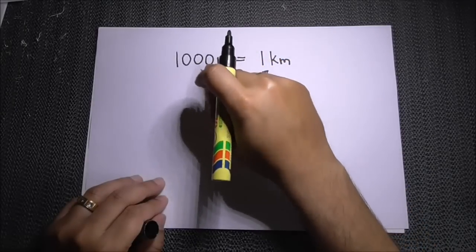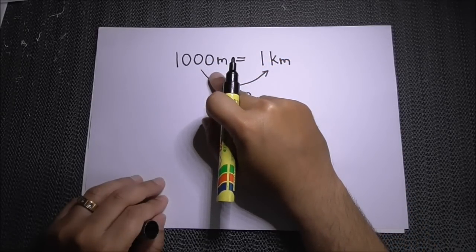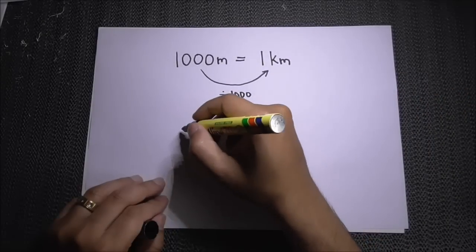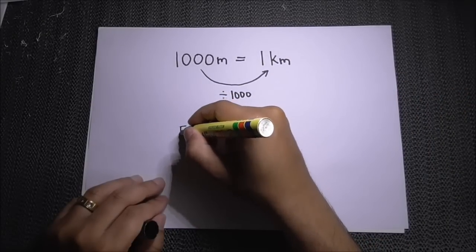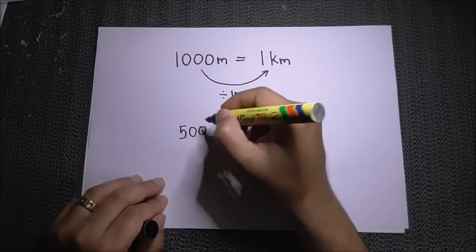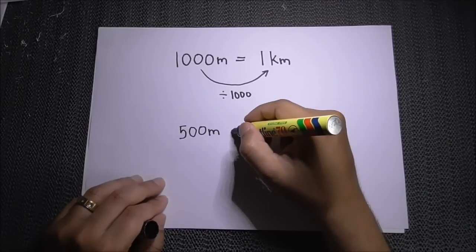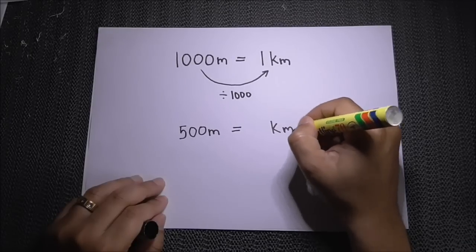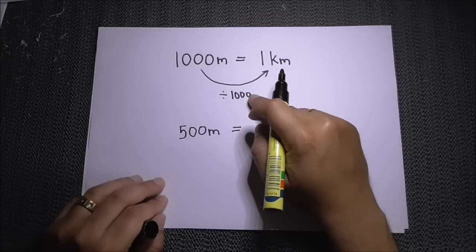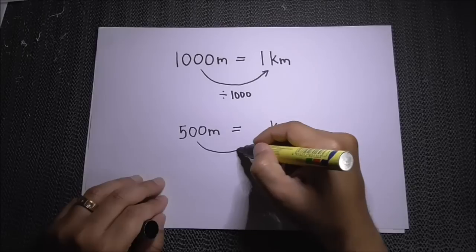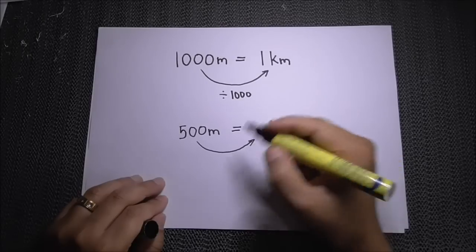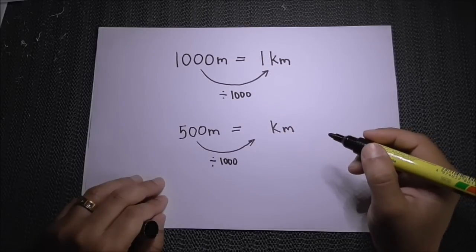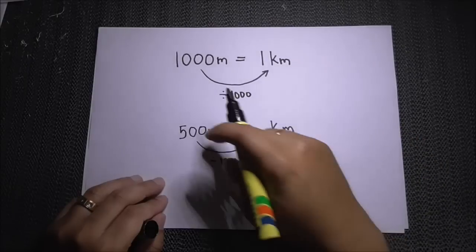Simply because one thousand units of meters makes one unit of kilometer. Say you had a question where you had five hundred meters and you needed to convert this 500 meters into kilometers. The same rule applies — you need to divide by one thousand.